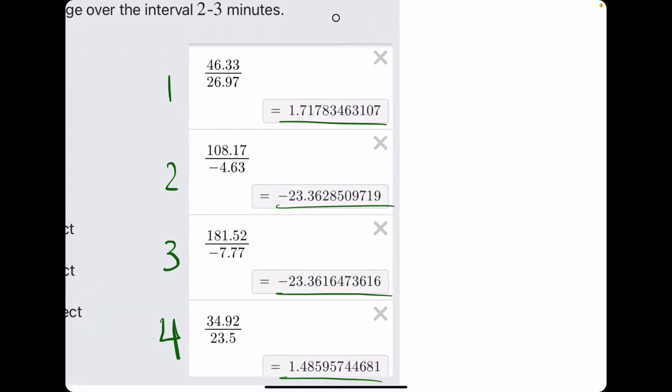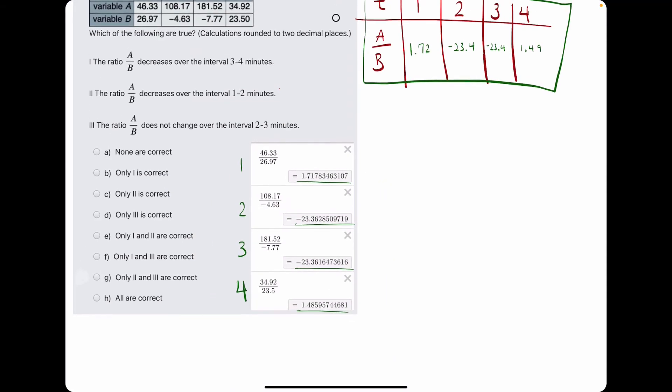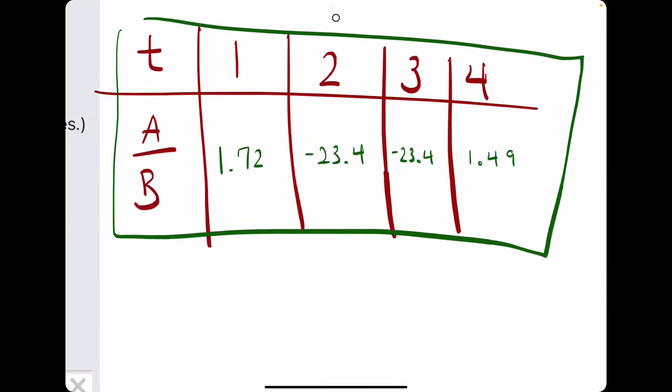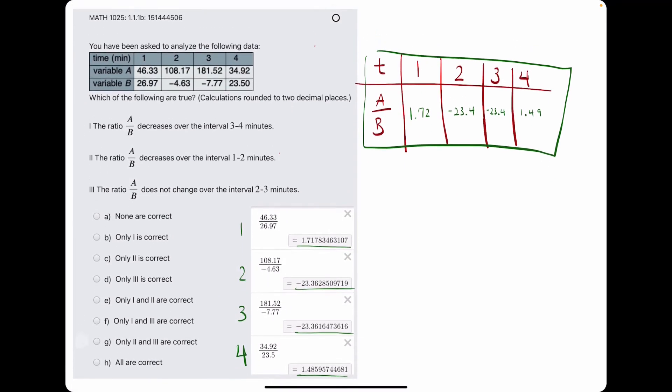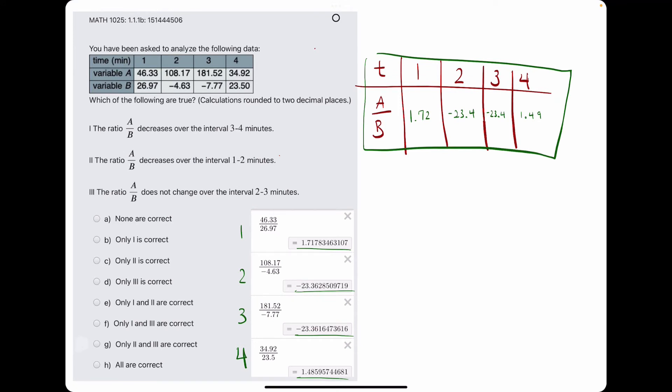So after calculating these ratios in Desmos, I've gotten these four values, so I've plugged them in here just to complete this chart. And now let's go over each of these statements.